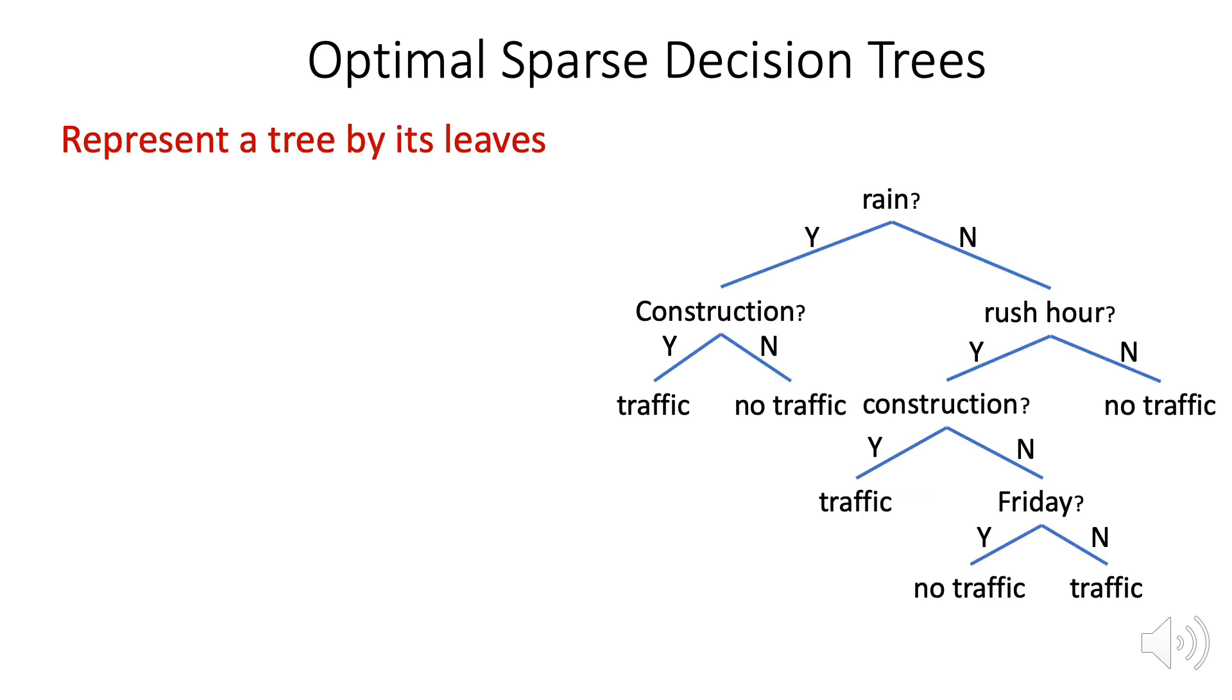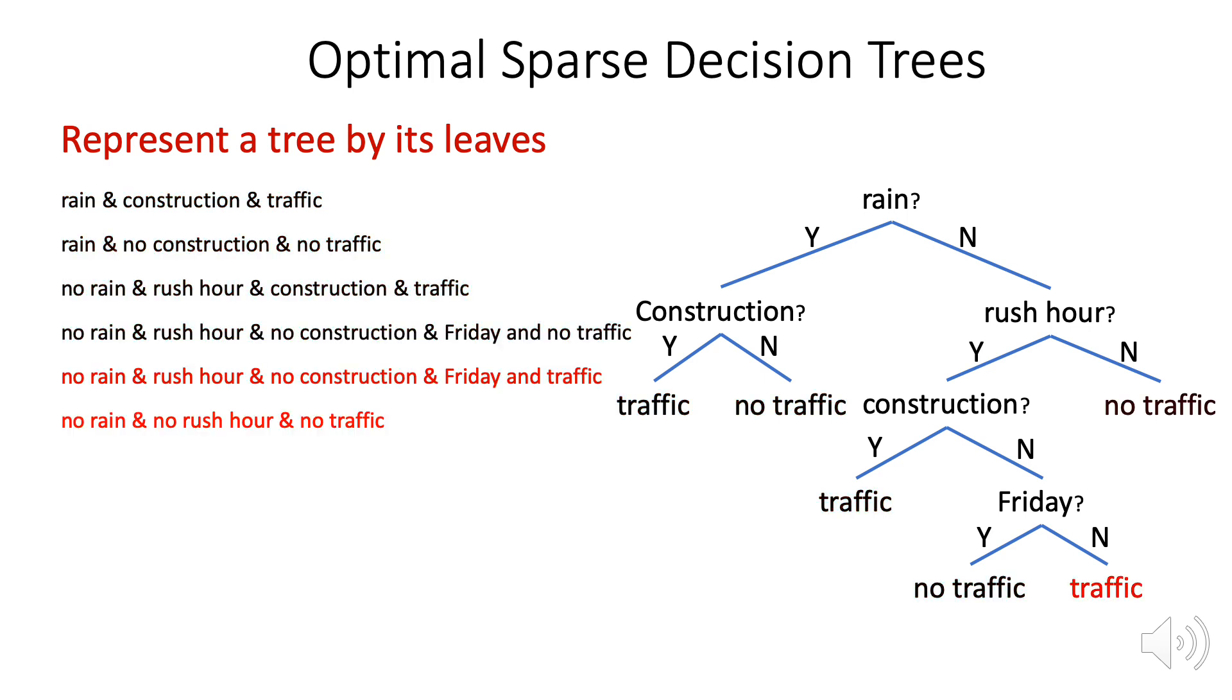We represent each tree only by its collection of leaves. And this is a very convenient way to work with trees. And we store bounds and intermediate results within each leaf.